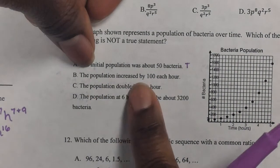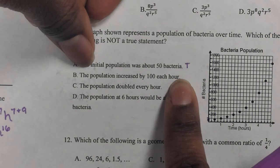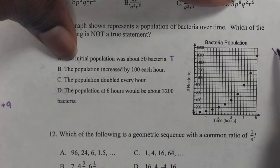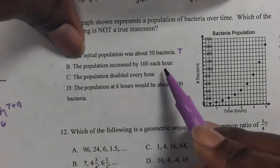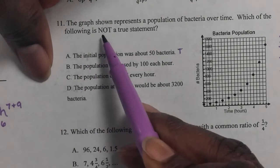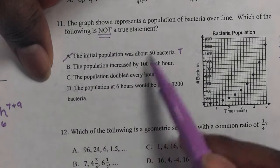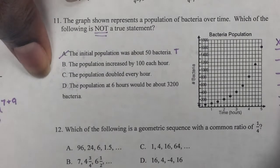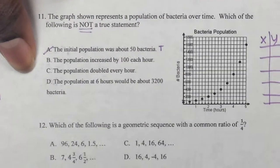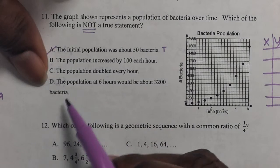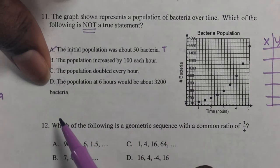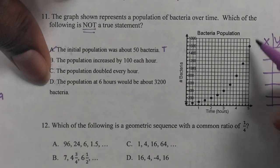The population increased by 100 each hour. So in order to see if the population increased by 100 each hour, you might have to make yourself a table. So I'm just going to leave that one as a maybe, because we're looking for the one that's not true. It can't be A because A is true. The population doubled every hour. I would have to make a table so I can make sure. So I'm just going to leave that one as a maybe for now. The population at six hours would be about 3,200 bacteria.